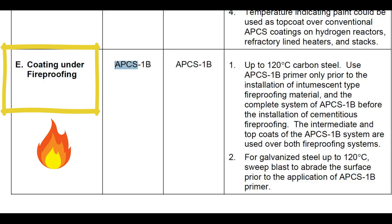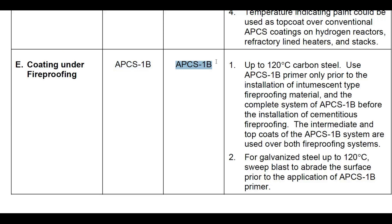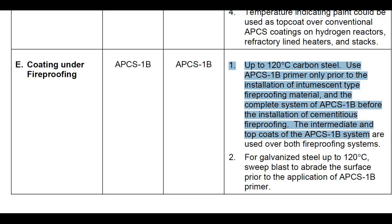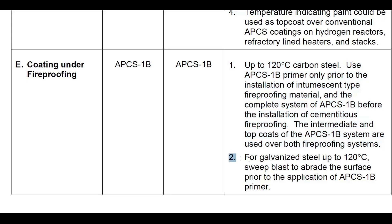For coating under fireproofing, APCS1B is used for both new construction and maintenance. Point 1: For carbon steel up to 120°C, use APCS1B primer only prior to installation of intumescent-type fireproofing, and the complete system of APCS1B before installation of cementitious fireproofing; the intermediate and topcoat of APCS1B are used over both fireproofing systems. Point 2: For galvanized steel up to 120°C, abrasive blast to upgrade the surface prior to application of APCS1B primer.